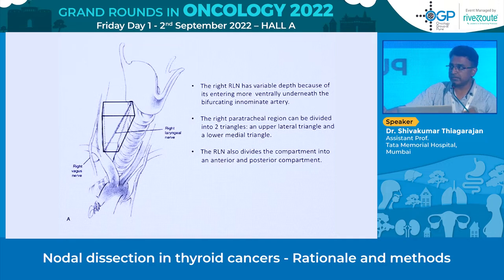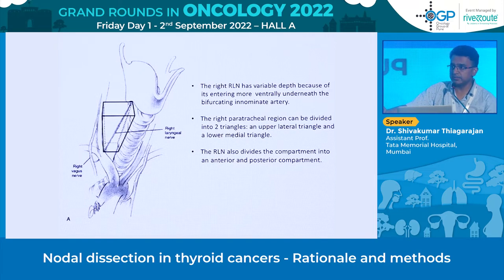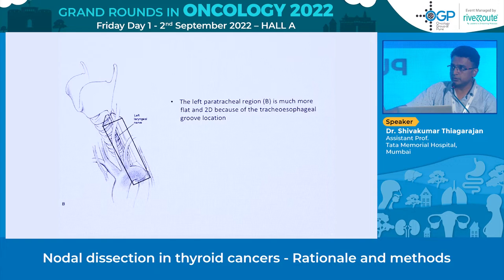When doing a central compartment clearance on the right side, it is not enough just to do clearance anterior to the nerve — nodes can be present beneath the recurrent laryngeal nerve as well. On the left side it is a two-dimensional plane where nodal disease is either on the side of or over the recurrent laryngeal nerve, not beneath it.